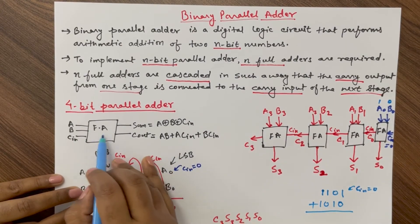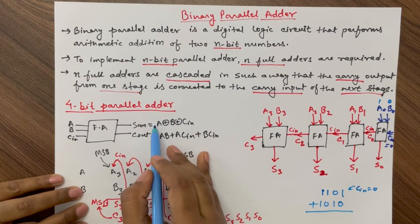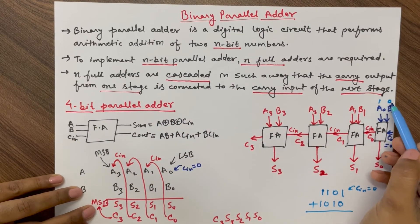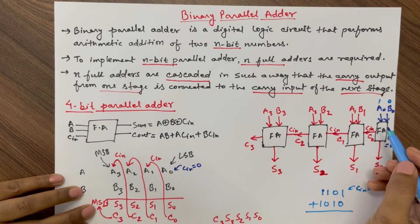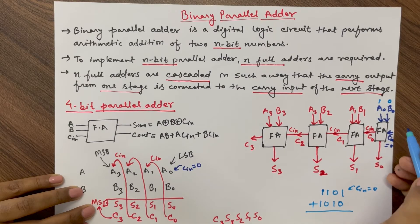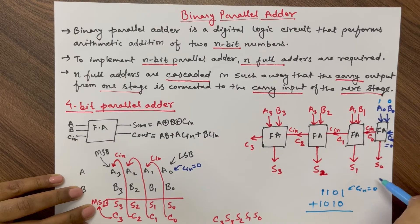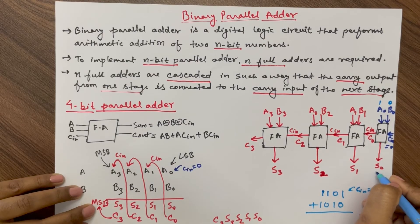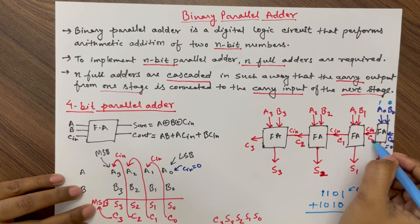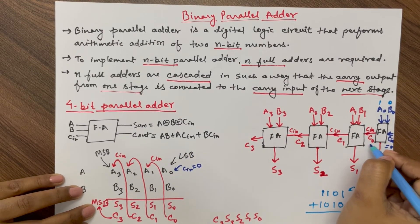The sum output of the full adder is A XOR B XOR C-in. So XOR of 1, 0, and 0: since there is an odd number of 1s, the output S0 will be 1. The carry output is AB + AC-in + BC-in, which evaluates to 0. So C0 = 0.